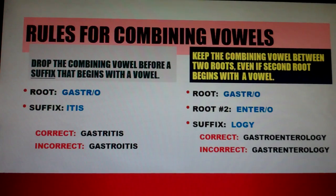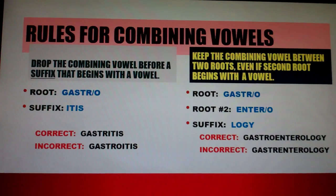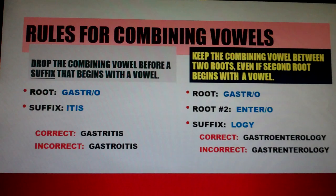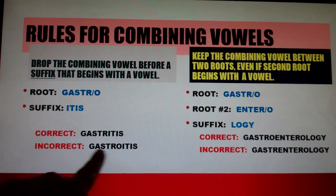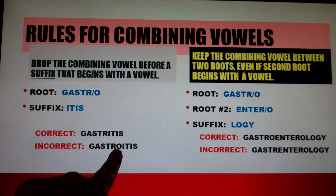Rules for combining vowels: drop the combining vowel before a suffix that begins with a vowel. For example, root Gastro plus suffix -itis: the correct form is Gastritis — not Gastroi-tis with the O retained.